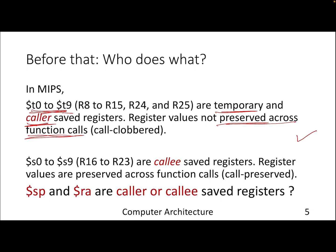If you want the contents of certain registers to be preserved across function calls, those are called callee-saved registers. In one of the labs you will need to work with caller and callee registers, so be careful about this convention. Some registers are by default caller-saved and some are callee-saved, and based on which category they fall into, their semantics will change in terms of function calls.